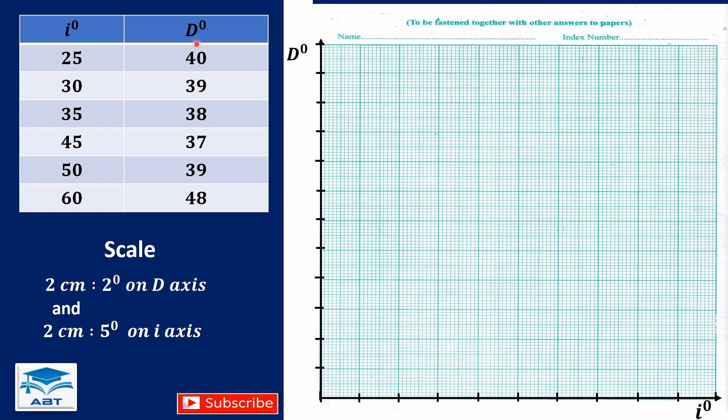Looking at the values of D, we can start from 34, add 2, we have 36, and keep on adding 2. And looking at the values of i, we can start from 20. Choose a scale of 2 centimeters to 5 degrees on I axis. So the next value will be 25, 30, 35, and so on.